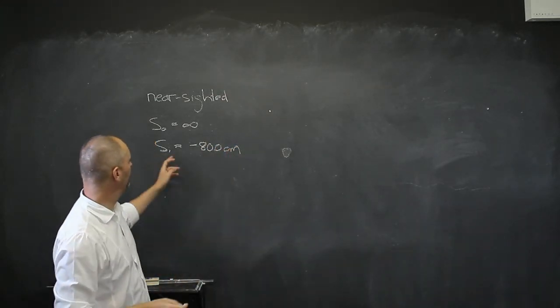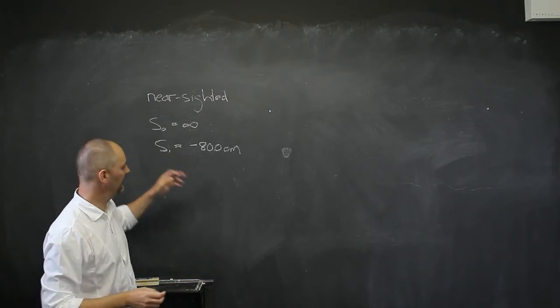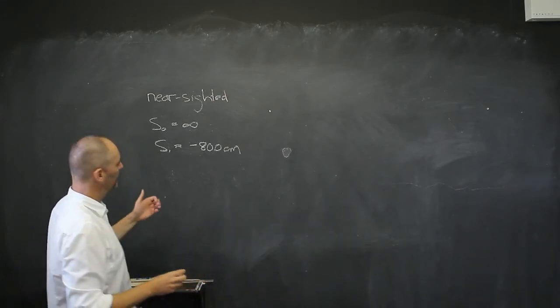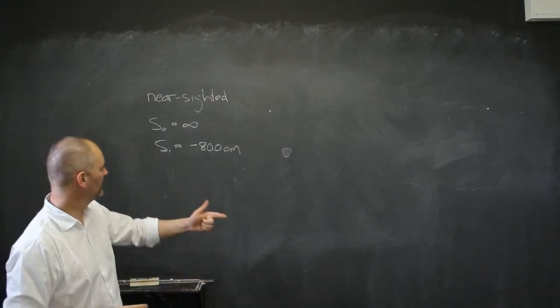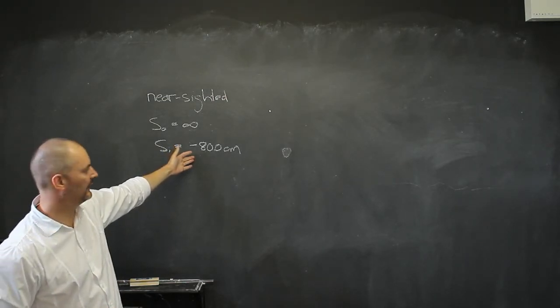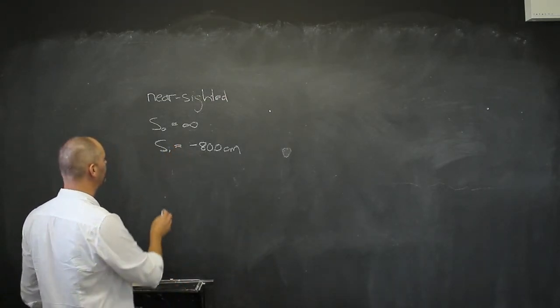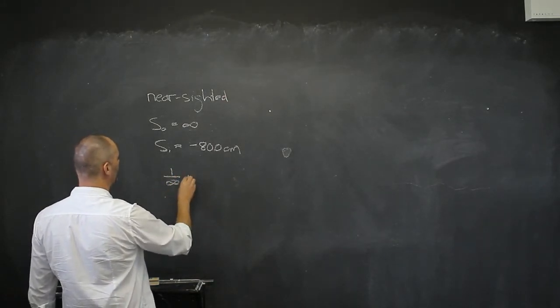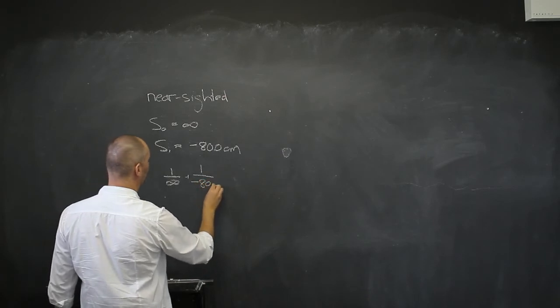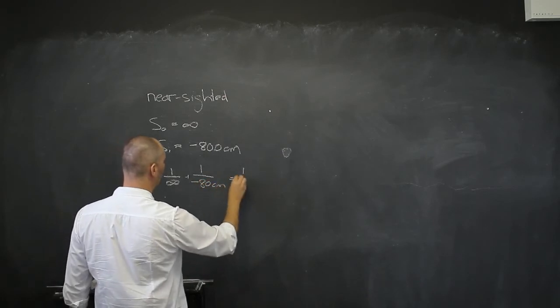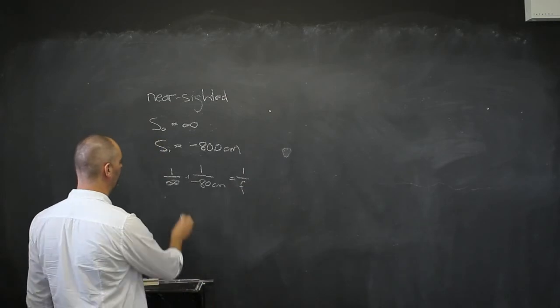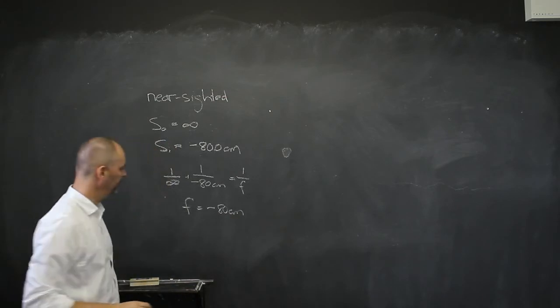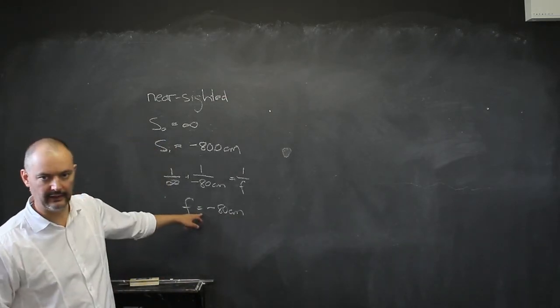That is where we need to, the image has got to form at this 80 centimeters. Up to that point he can still focus. So we need an upright image, it's got to be virtual. So the only thing that really is going to give this for us is a diverging lens. It's a concave lens or a negative lens. One over infinity is just zero, plus we're going to have one over negative 80 centimeters, is going to be one over f. So the focal length of this lens is just going to be negative 80 centimeters.